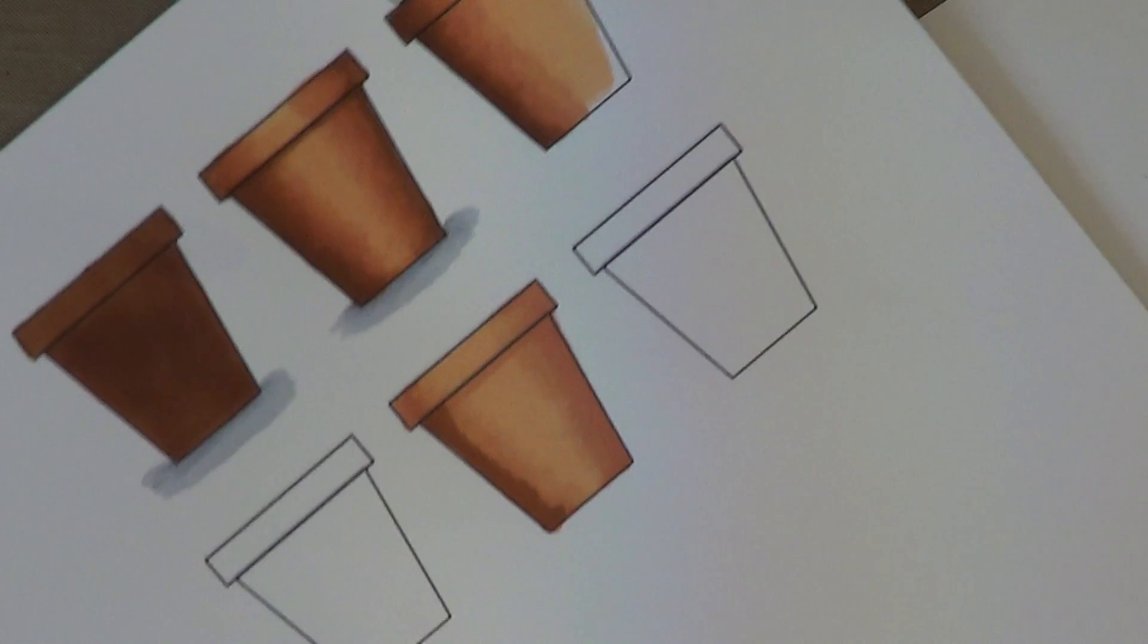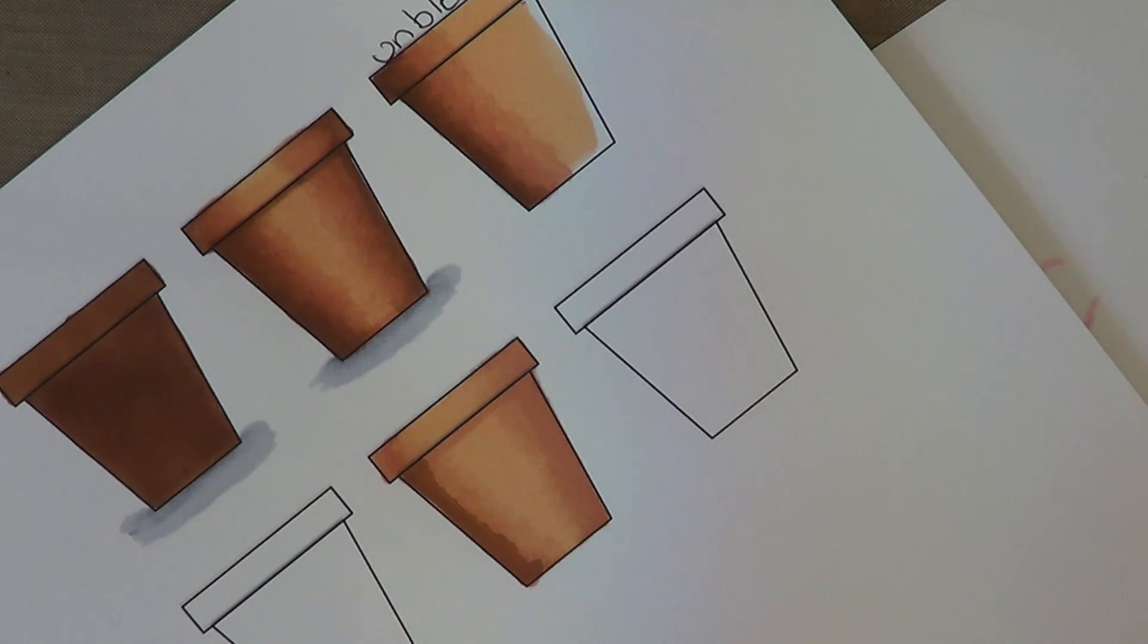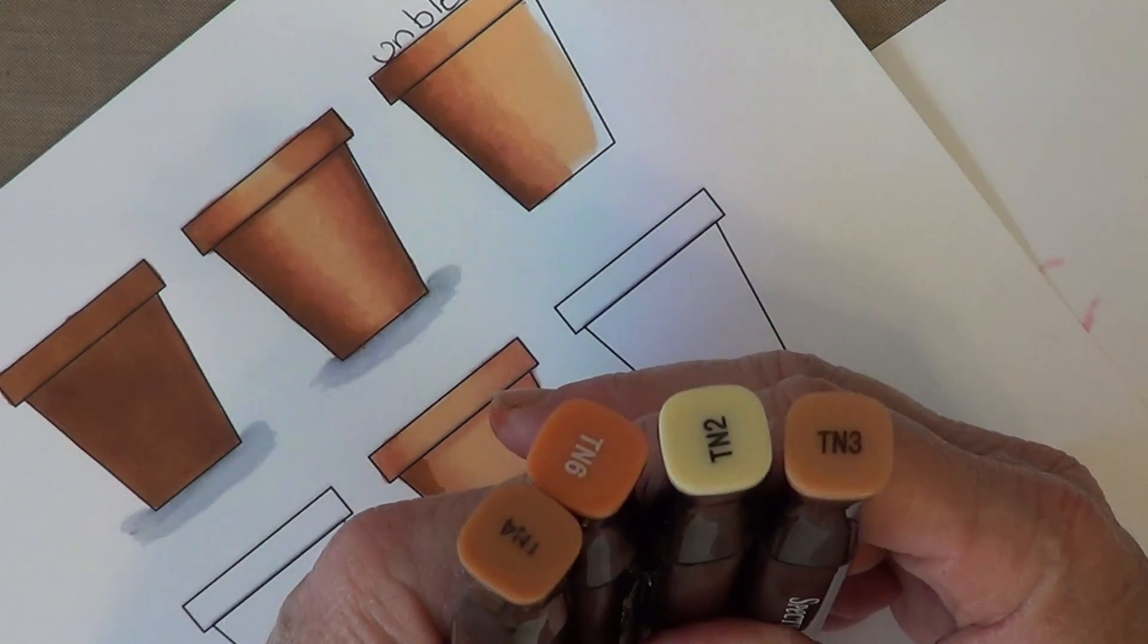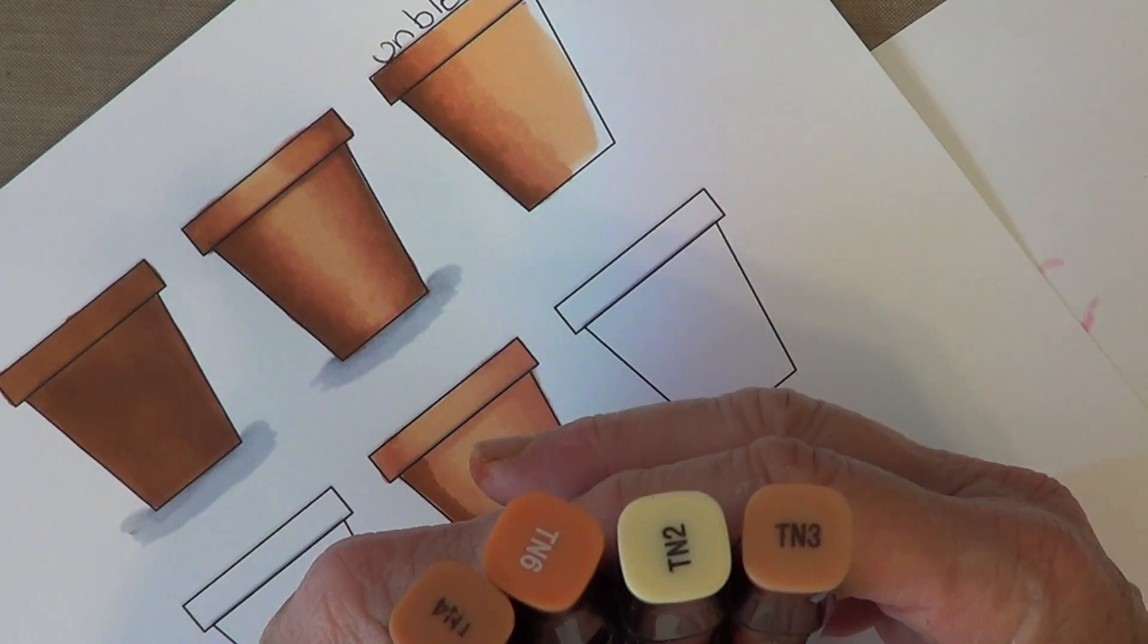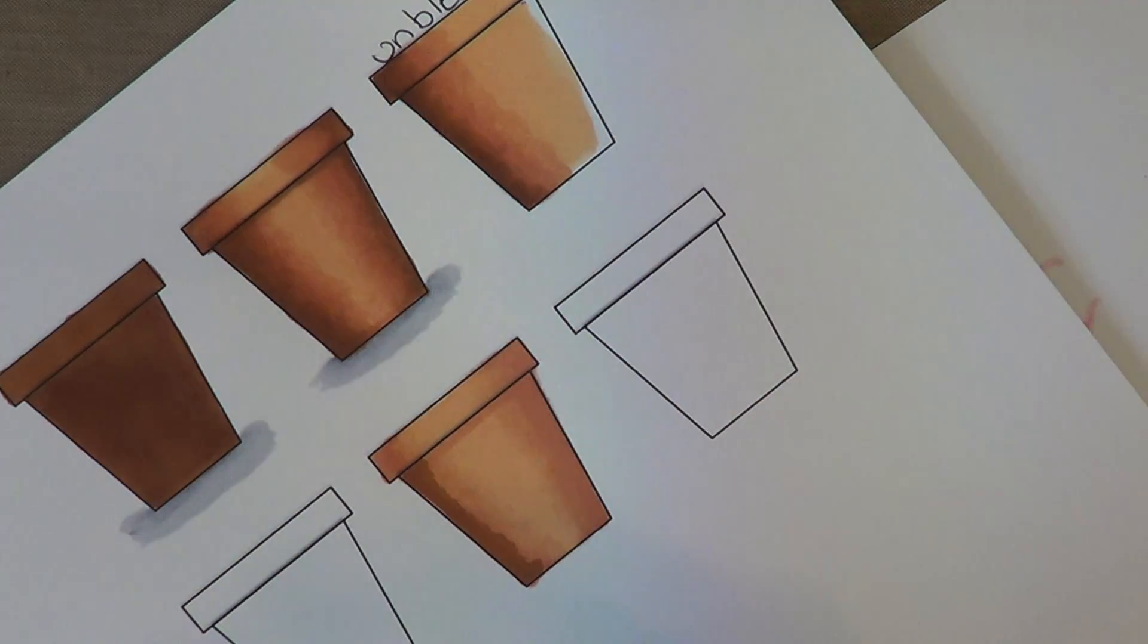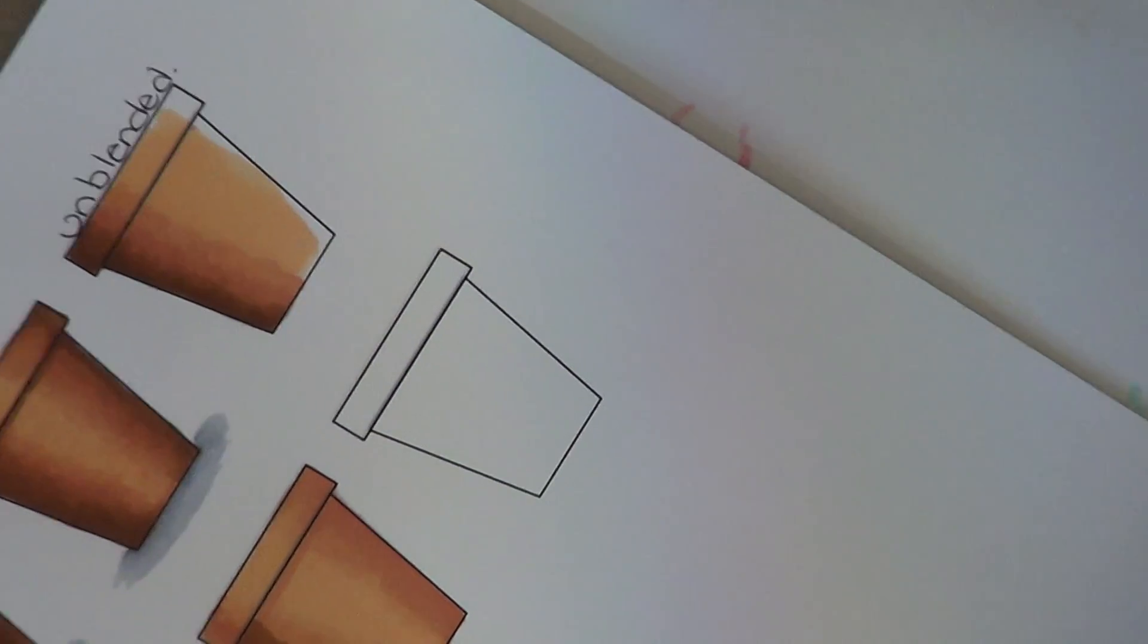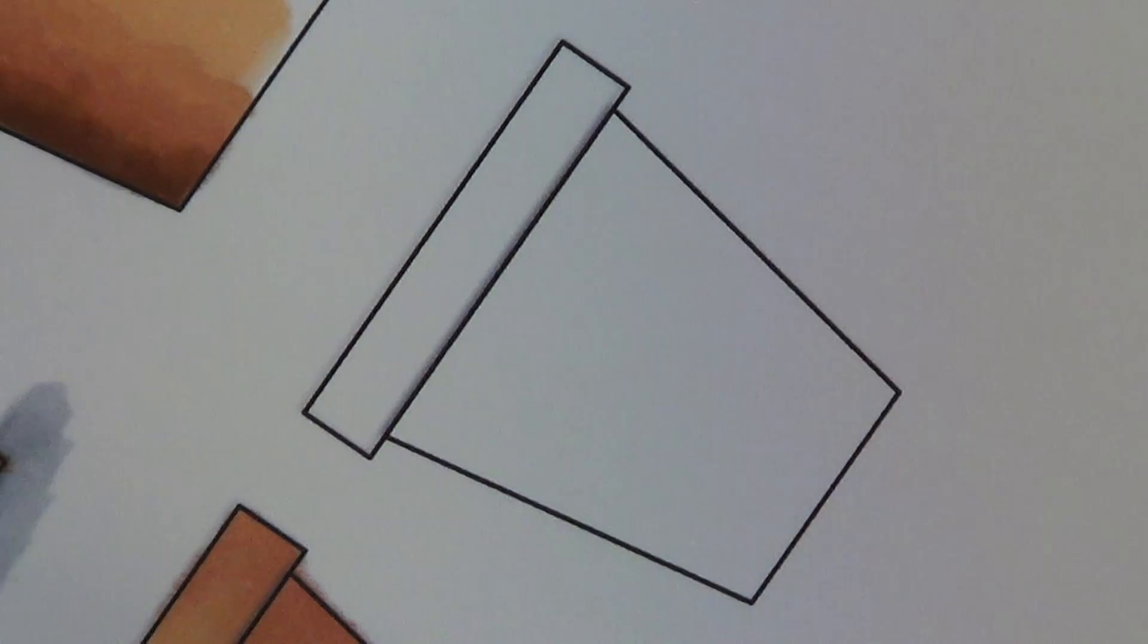Today I'm going to use three or four colors. I always put out several different colors because I always change my mind halfway through. Today I have a TN6, a TN4, a TN3, and a TN2. These are the colors I'm going to use. You only need to use three colors on your flower pot, but I might use four so I pulled them all four out. There's my flower pot.